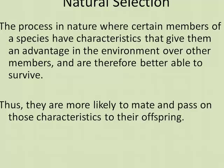Natural selection is the process in nature where certain members of a species have characteristics that give them an advantage in the environment over other members of the same species, and they are therefore better suited to survive. Thus, they're more likely to mate and pass on the characteristics that help them survive.